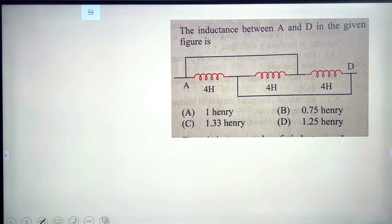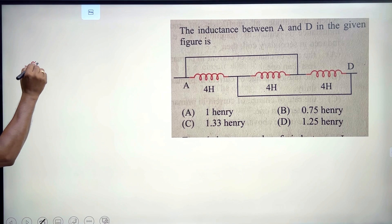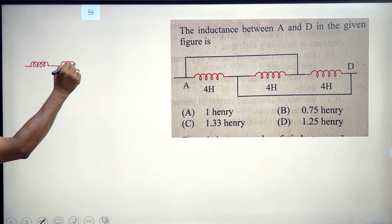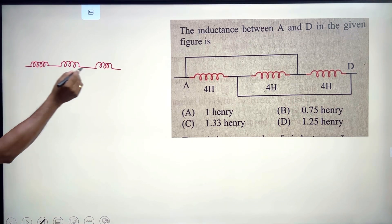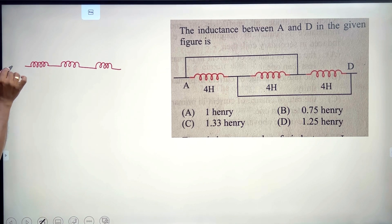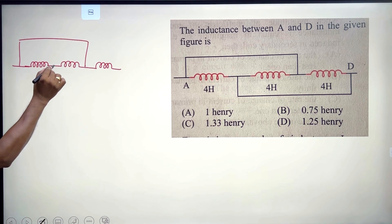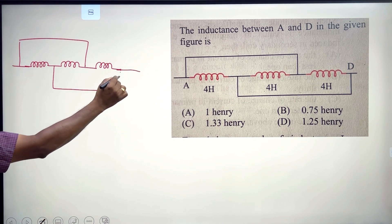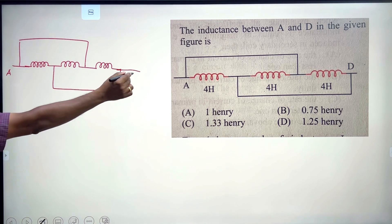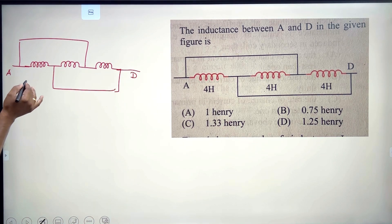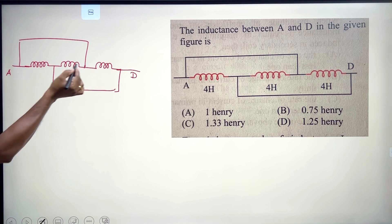Next problem: the inductance between points A and D in the given figure needs to be identified. This involves a capacitor circuit. We use capacitor and resistor in series — the capacitor and resistor combination is analyzed to identify the effective inductance between A and D.